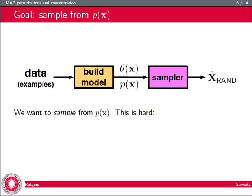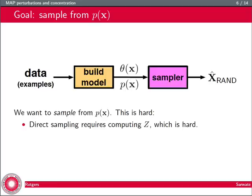What you want to do is sample from the posterior distribution p of x, but this is quite difficult. You take your data, build a model, and want a sampler to sample several configurations biased towards high theta of x. Direct sampling is difficult because it involves computing the partition function Z, which is computationally intractable. Another option is Markov chain Monte Carlo sampling, but this is slow because of the ragged probability landscape.